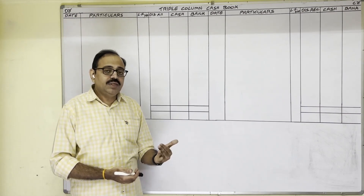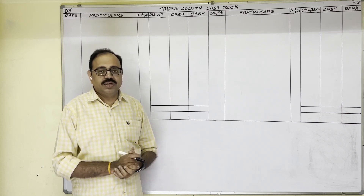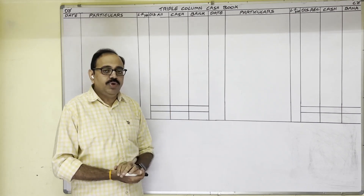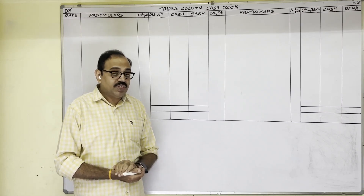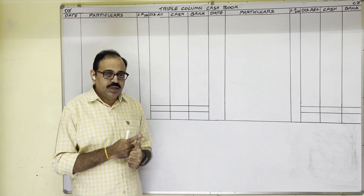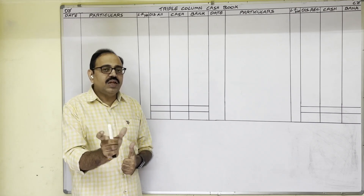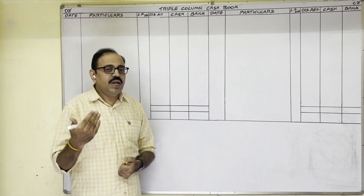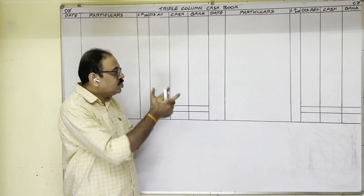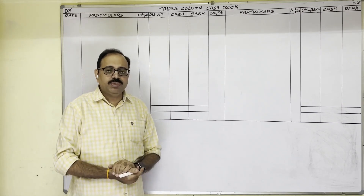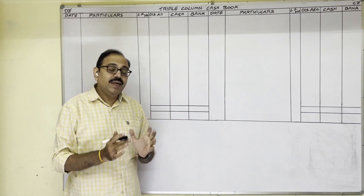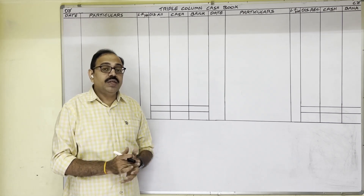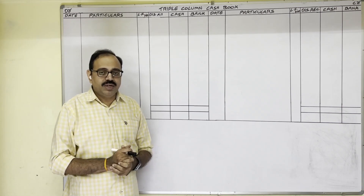The remaining sentences are transactions. To record transactions in the triple column cash book there are two methods. The first is the journal entries method, where for every transaction there is one journal entry and we post it into the cash book. The second method is the hints method. In this video I am going to explain this second — hints — method.